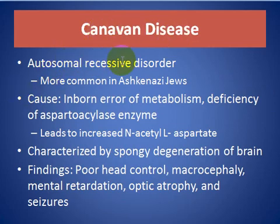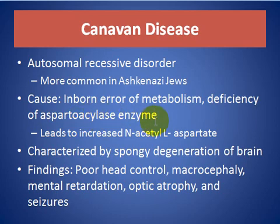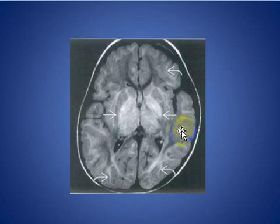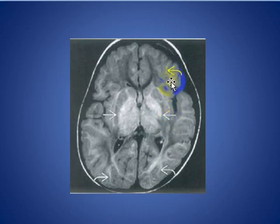Canavan disease is an autosomal recessive disorder more common in Ashkenazi Jewish populations. It is caused by an inborn error of metabolism — deficiency of aspartoacylase enzyme — leading to increased N-acetylaspartate. It is characterized by spongy degeneration of the brain. Findings include poor head control, macrocephaly, mental retardation, optic atrophy, and seizures. Axial FLAIR MRI in an affected child shows increased signal in the basal ganglia, thalami, and U-fibers.